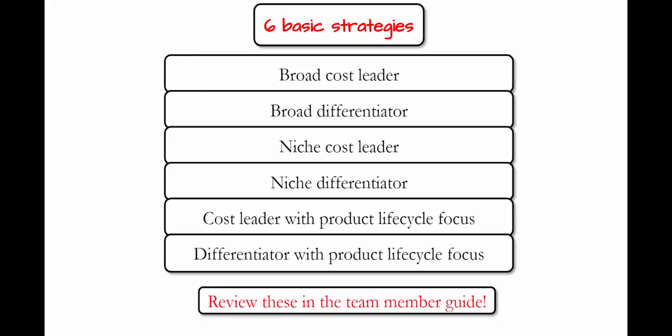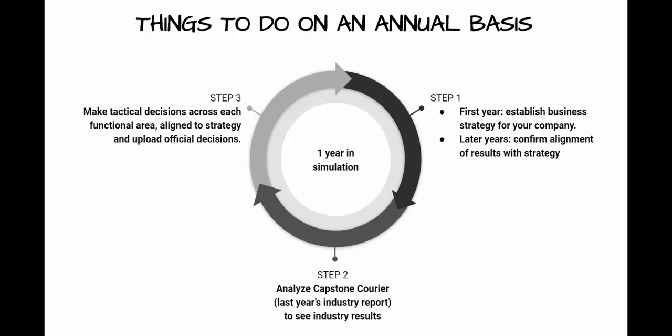Companies can follow any of these strategies as well as hybrid approaches combining different strategies for different market segments. You should carefully review the strategies in the team member guide. There will be eight rounds of decision-making. Every round represents a year. You need to establish your business strategy, then analyze the Capstone Courier — last year's industry report — to see industry results, make tactical decisions across each functional area aligned to strategy, and upload official decisions before they are processed. When decisions are processed, you will see if your results and strategy align, and if not, make the necessary adjustments.